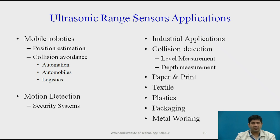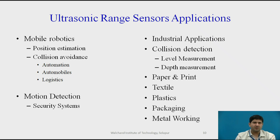The applications are tremendous — there could be an entire session dedicated to them. In mobile robotics, ultrasonic range sensors are used for position estimation and localization when a global localization system isn't available. Collision avoidance is another very widely used application, not just in mobile robotics but also in vehicles and automobiles. Ultrasonic range sensors are significantly better than infrared range sensors for collision avoidance, finding wide application in automation, automotive, and logistics.